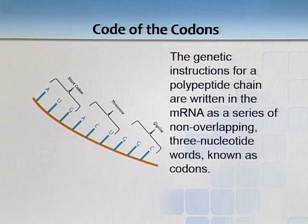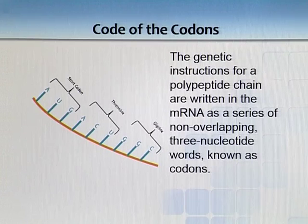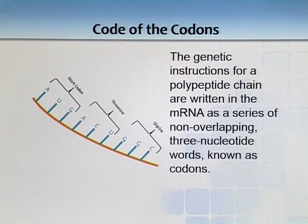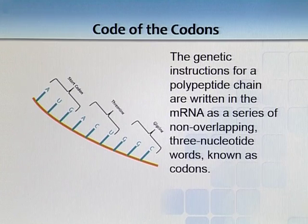So we can say that the genetic code is written in 3-letter words — 3 nucleotides known as codons. These codons are on mRNA, which we have discussed at length in terms of how it is made. As you can see in this figure, AUG is the start codon, while ACU codes for threonine and GGC codes for glycine — all amino acids coded by these codons.